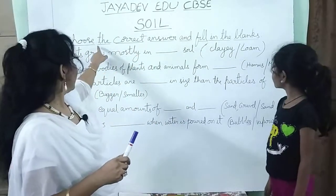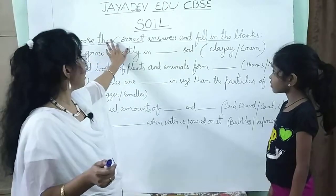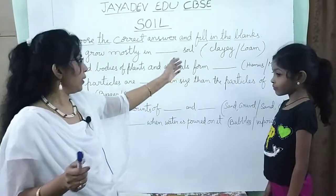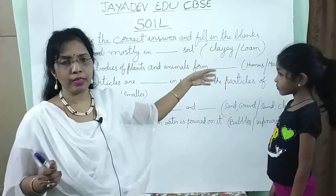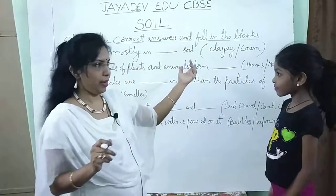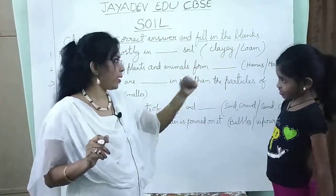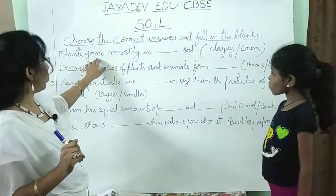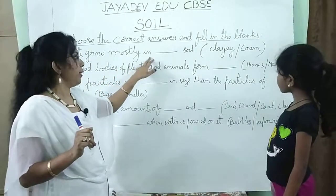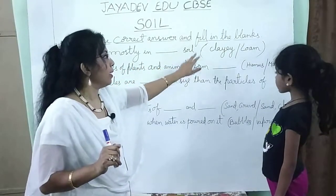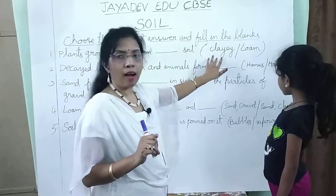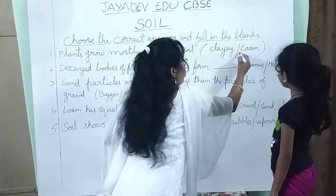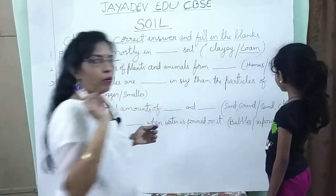The next one is: choose the correct answers and fill in the blanks. There is some choice — from this you can select the correct answer. Our first one is: plants grow mostly in dash soil — clay or loam? It is loam. In loam soil, plants grow very well.